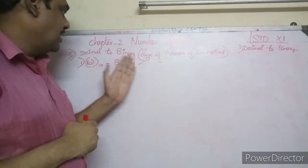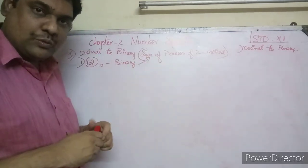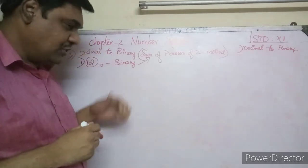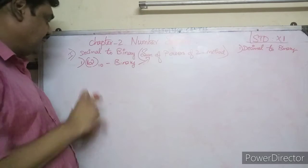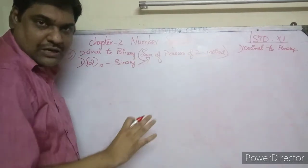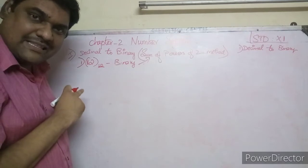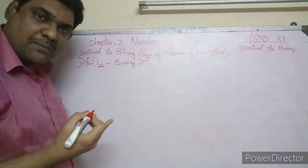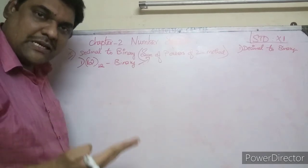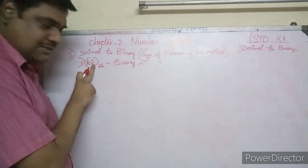In this session we will see how to convert a decimal number to binary using the sum of powers of two. In the last session we covered the long division method. Now we look at the sum of powers of two method. Base 10 is the decimal number system, base 2 is the binary number system, base 8 is the octal number system, and base 16 is the hexadecimal number system.